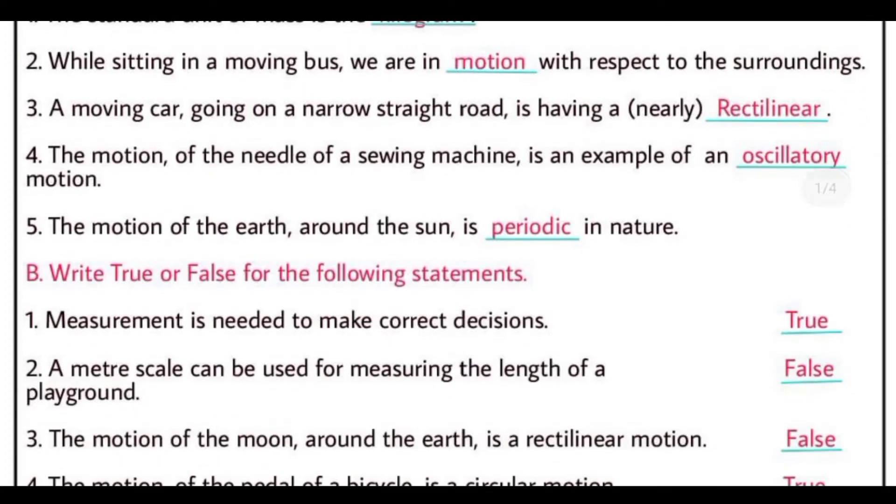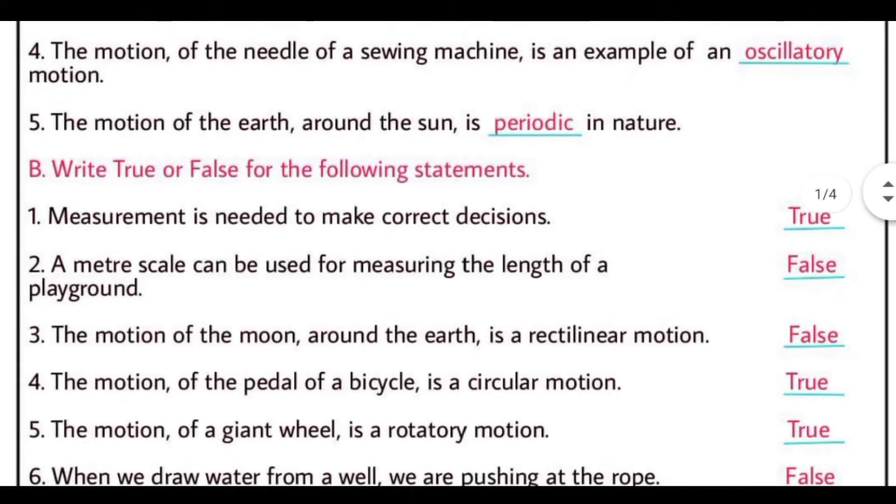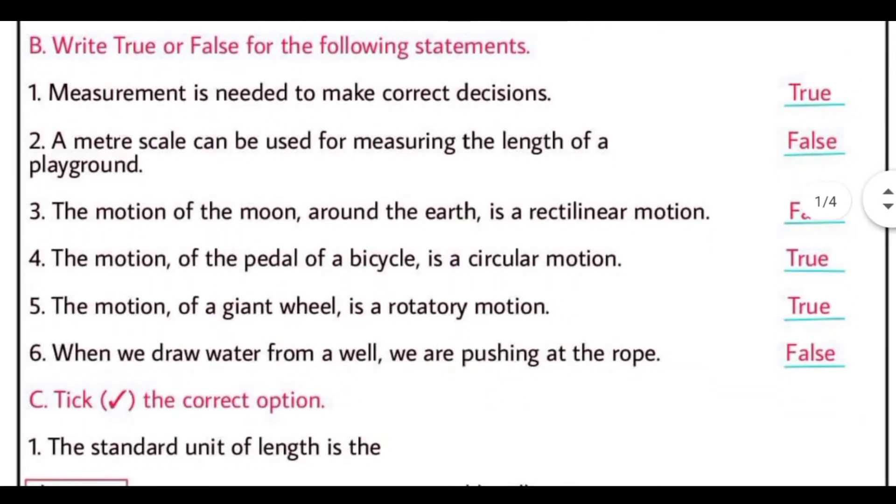The motion of the earth around the sun is periodic in nature. Earth ka motion sun ke charo taraf periodic hota hai, kyunki woh same time pe apne aap ko kuch samay ke baad repeat karta hai, same path pe. Now true and false, sahih aur galat. Measurement is needed to make correct decisions. This is correct, kyunki sahih measurement hoga, toh hum sahih decisions le payenge.